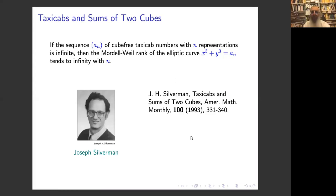After the cubes, Hardy asked Ramanujan whether he knew a number which was the sum of two fourth powers in two different ways. Ramanujan answered that he did not know, but very likely this is a very large number. In fact, such a number was already known to Euler. An infinite family of one-parameter solutions for this equation is known by Elkies, and it is not trivial — not just by multiplying by a fourth power — so we know the sequence is infinite.